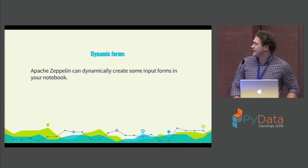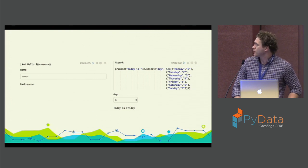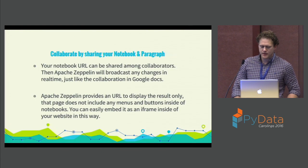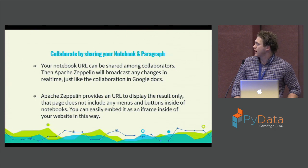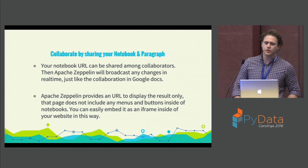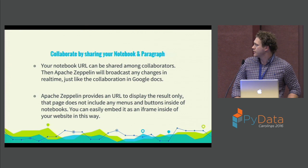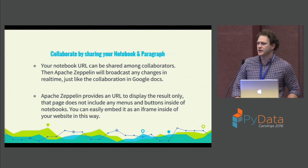Zeppelin also has built-in dynamic forms, so if you need to provide some input, I'll show a demonstration of these in a minute. And it's also really focused on collaborative sharing — it has built-in version control, something that has been very difficult to do in Jupyter notebooks with its JSON format. You can one-click version control in Zeppelin. You can also use the built-in WebSocket to output any of your graphs directly to your web browser and share those, hosted in an iframe inside of your website.